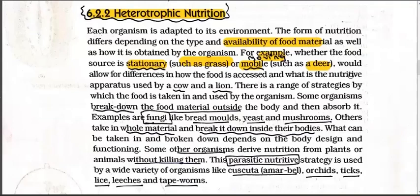There is a range of strategies used in how food is taken in. Cow is herbivorous while lion is carnivorous. Some organisms break the food material outside the body and then absorb it - fungi like bread molds, yeast, and mushroom do this; they digest their food outside and then acquire nutrients from it. Others take in the whole material and break it down inside their body - like how we chew and digest. What can be taken in and broken down depends on the body design and functioning of the organism.